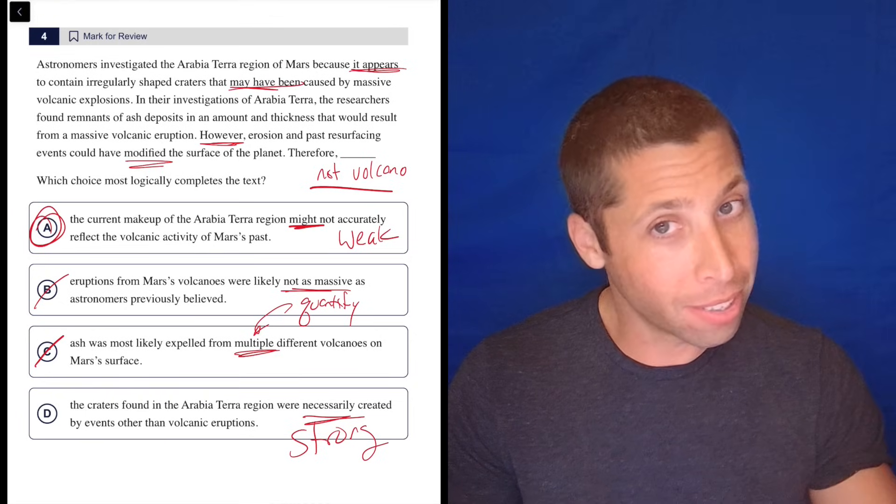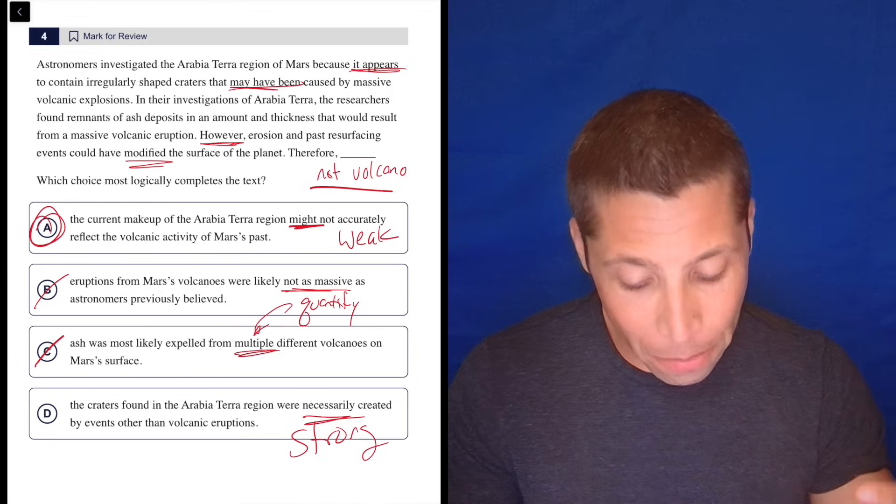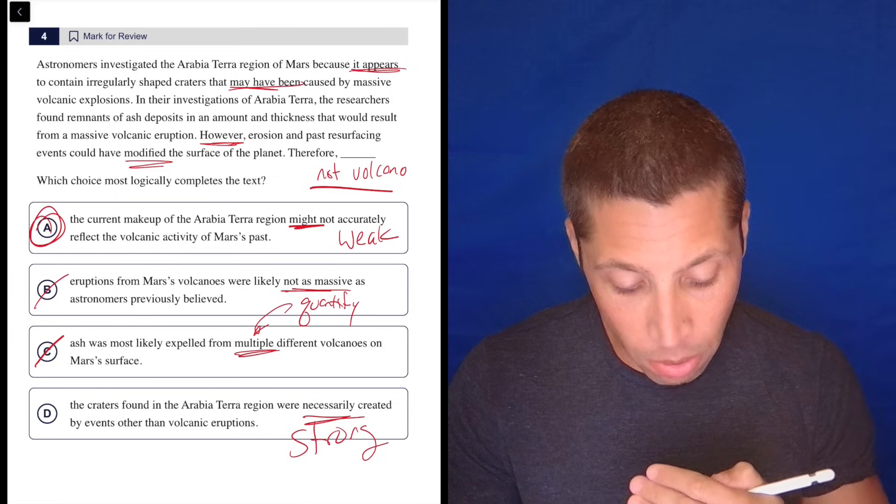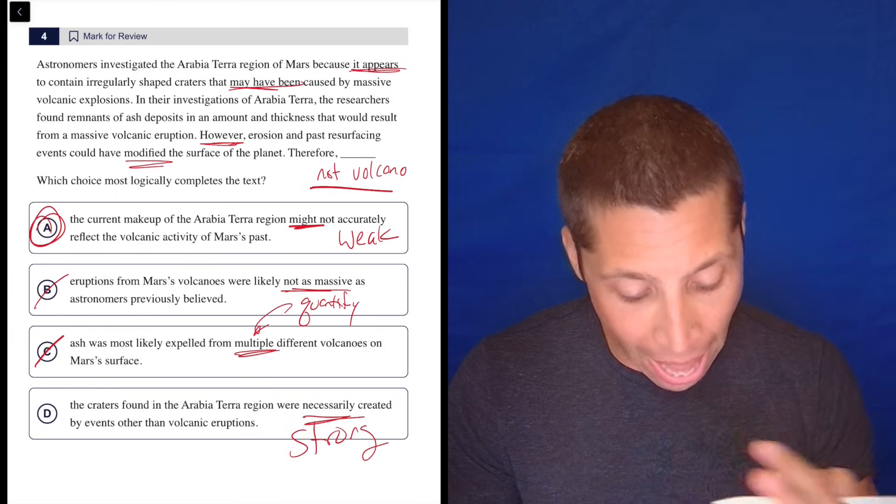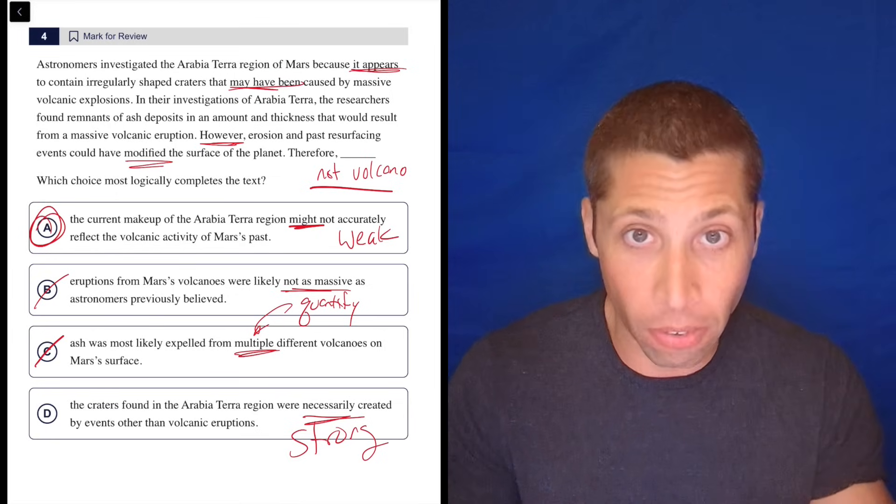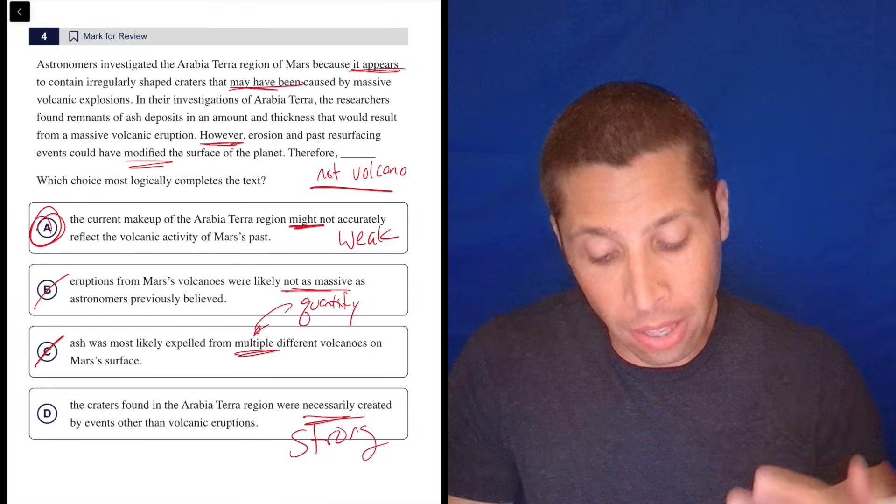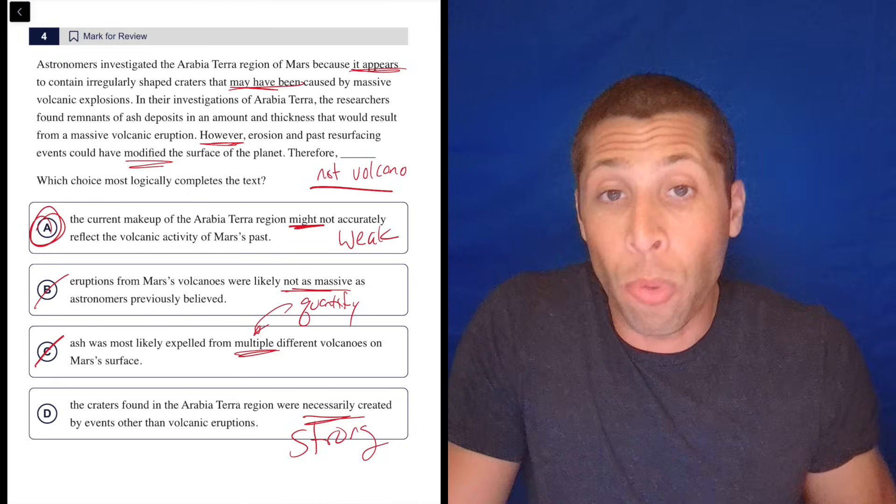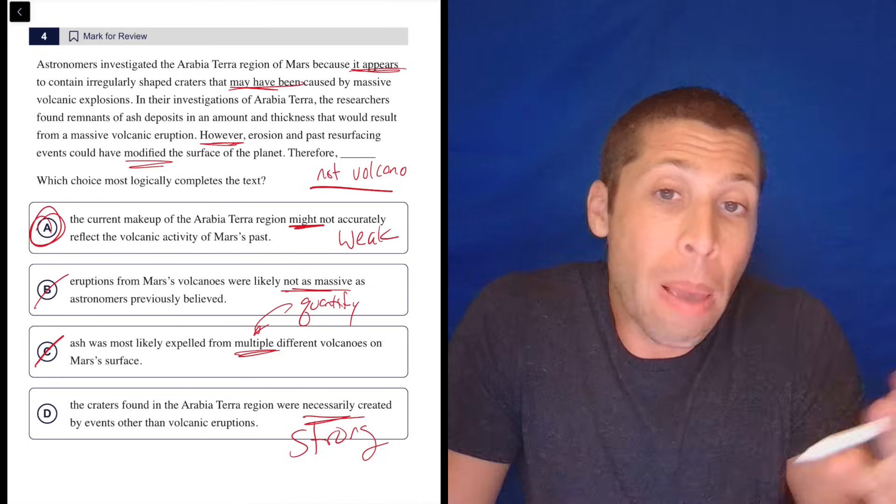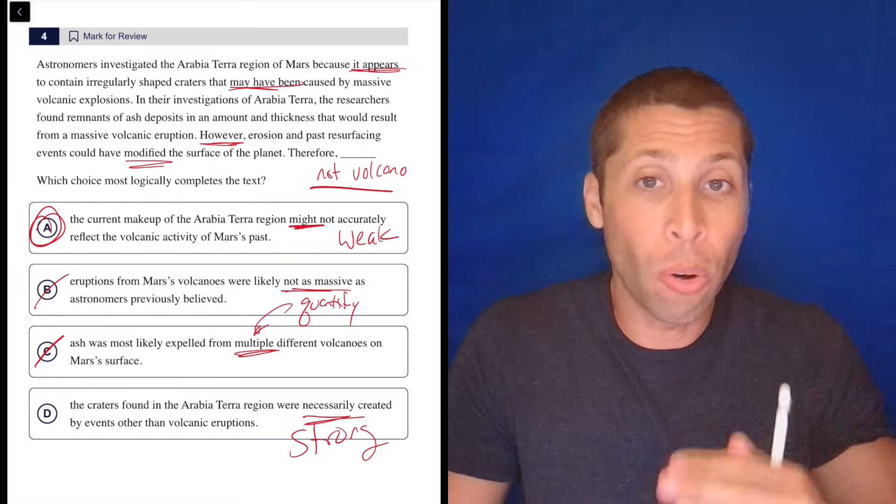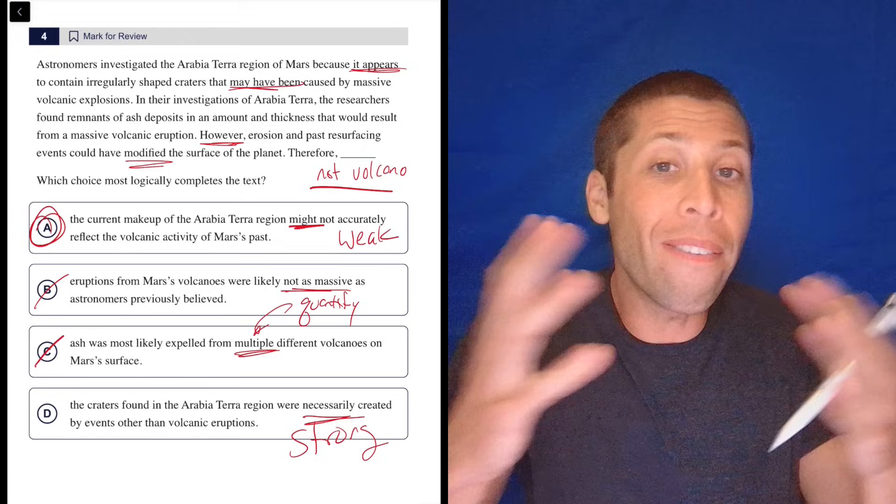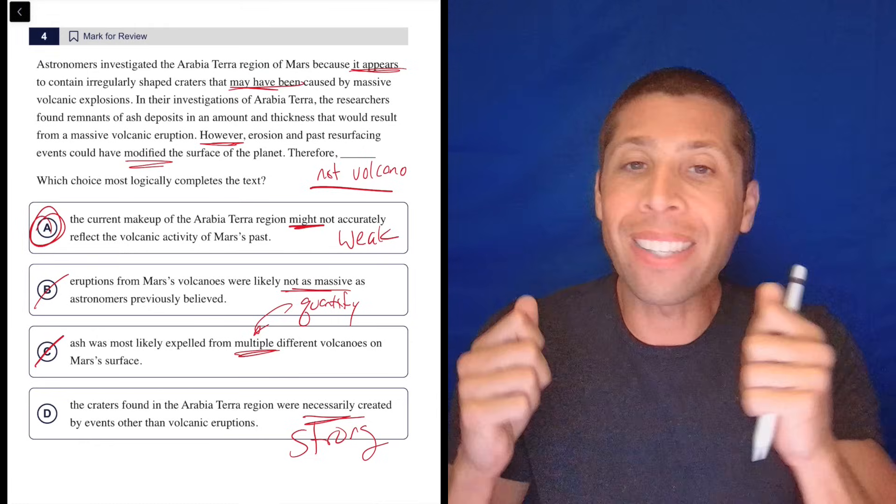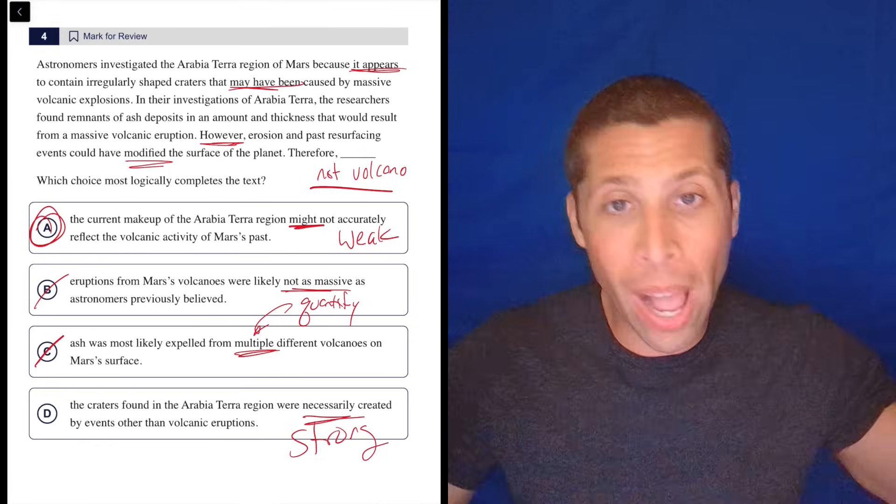The passage is not going that far, right? It's saying it appears to contain these craters that may have been caused by a volcano. In their investigation, they found the ash that would suggest a volcano. But there's past resurfacing events that modified the surface, meaning we found something but maybe it doesn't mean what we think it means, right? So all that saying is – the evidence that we have is not really super trustworthy. But it's not like we have evidence saying no way is it a volcano.